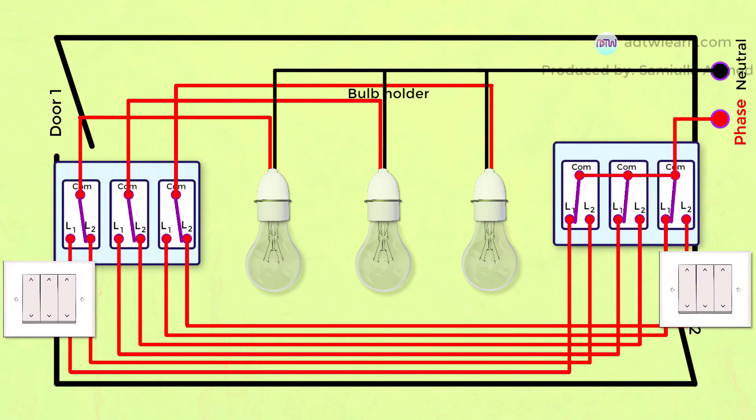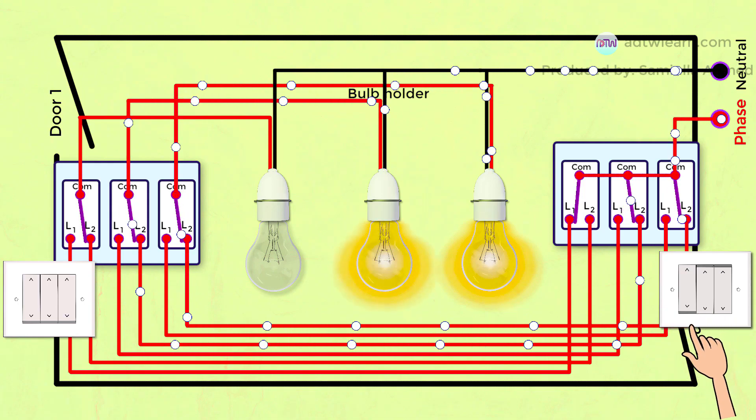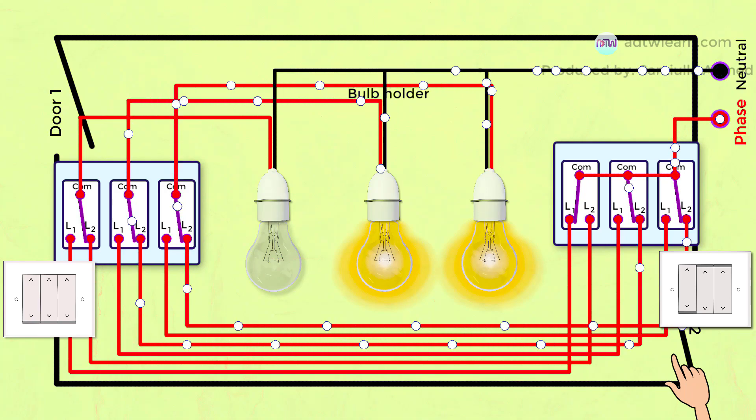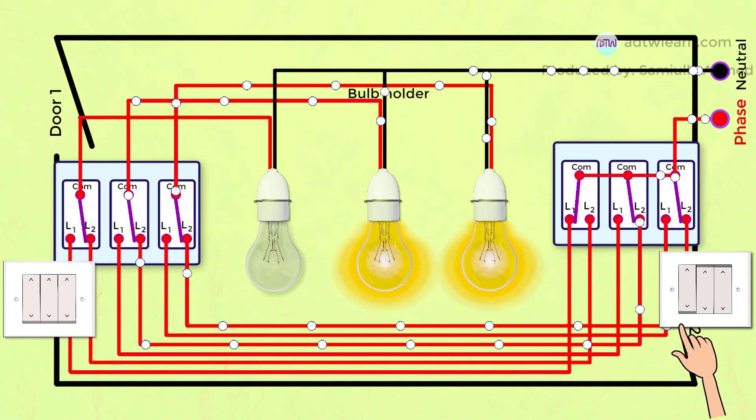Now we can turn on the first bulb. You can see how the current is flowing through the circuit. We can turn on the second bulb. And you can turn on the third bulb.